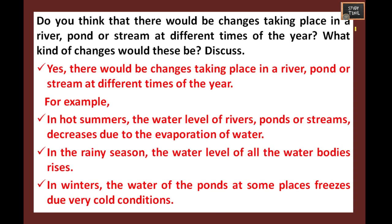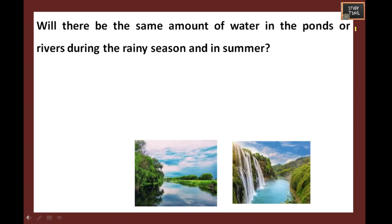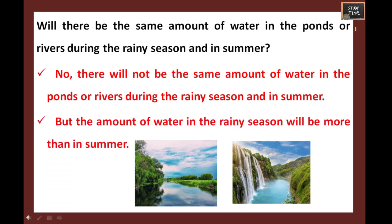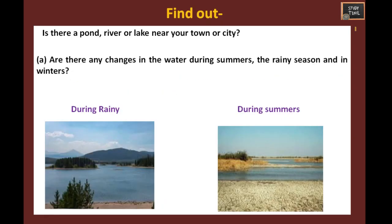Yes, there would be changes. For example, in hot summers the water level of rivers, ponds, or streams decreases due to evaporation of water. In the rainy season, the water level of all water bodies rises. In winter, the water body freezes due to very cold conditions. These are the changes that happen at different times of year. Will there be the same amount of water in ponds or rivers during the rainy season as in summer? No, there will not be the same amount — water will be more during the rainy season than in summer.